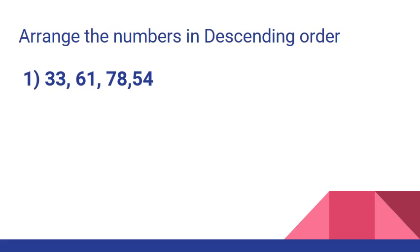After 78, the next greatest number will be 61. After 61, the next number will be 54, and after 54, the next number will be 33, which is the smallest. The descending order of the given numbers will be 78, 61, 54, 33.